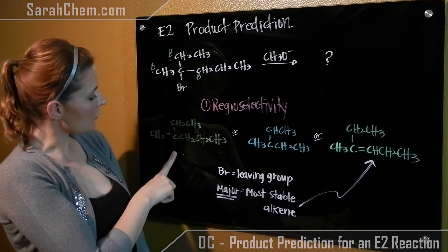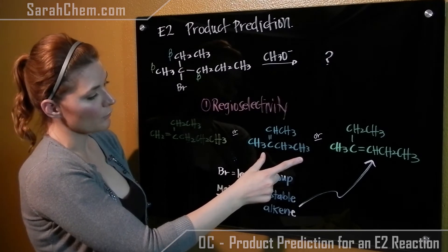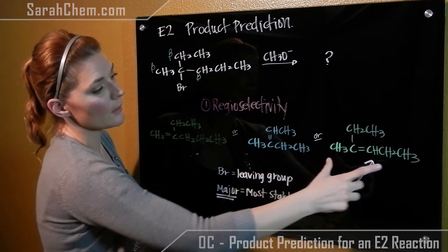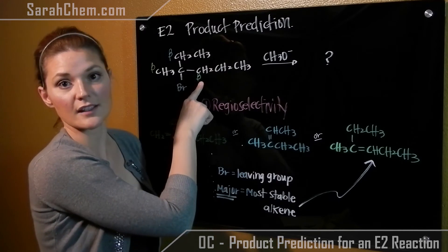So the yellow one would produce this, the blue beta carbon if it lost the hydrogen would produce this product, and finally we would obtain the green product if this carbon here lost the hydrogen.